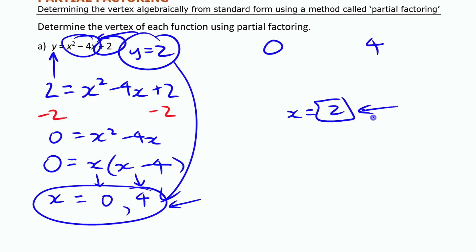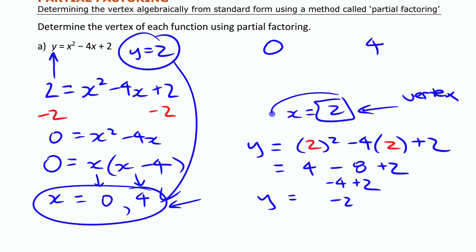And if I sub that in to the original function, then I can find the y-coordinate of the vertex. So if I then say I'm going to take that number squared minus 4 times that number plus 2, subbing that number in, and then work it out. 4 minus 8 plus 2. That gives me minus 4 plus 2, which gives me minus 2. That's the y-coordinate of the vertex.